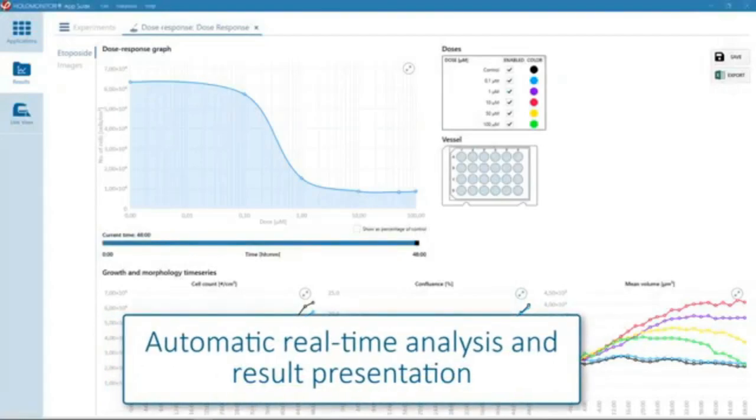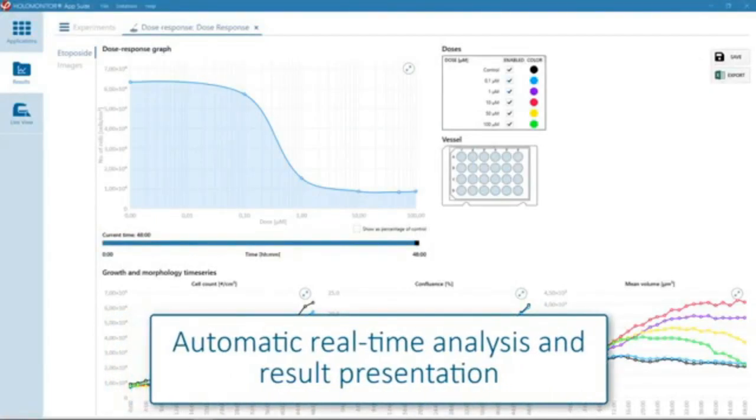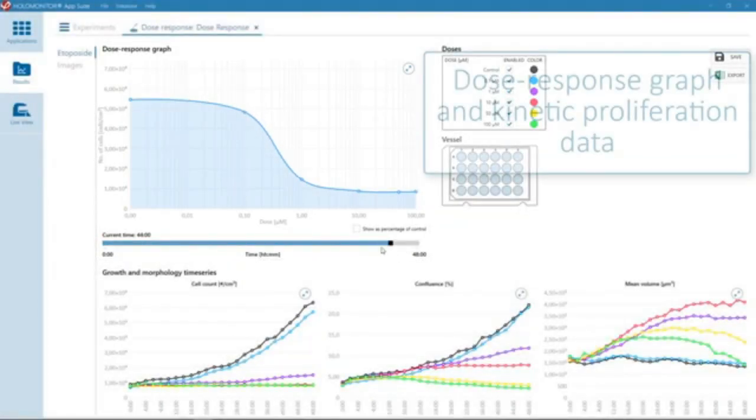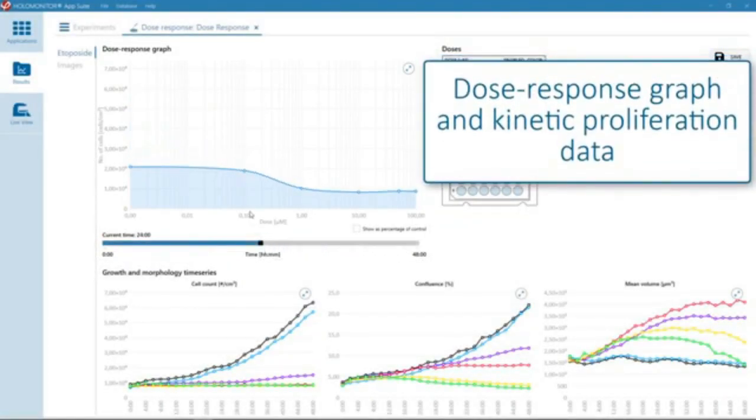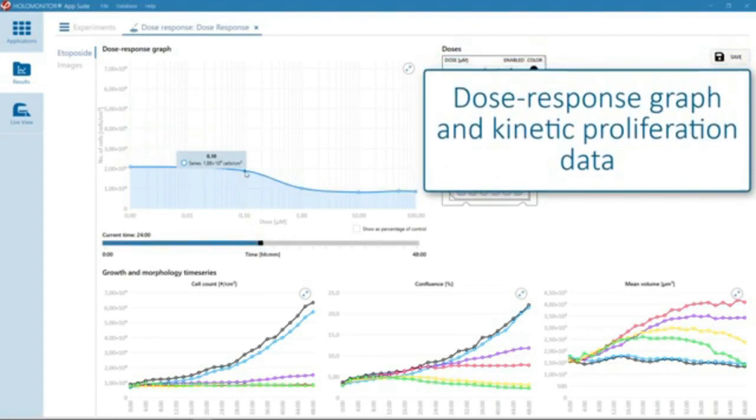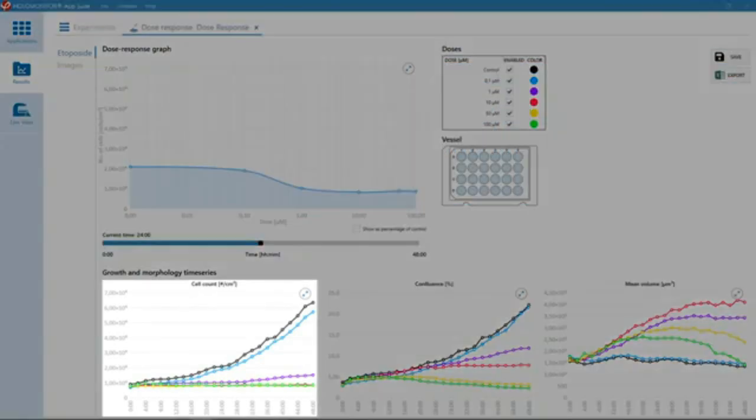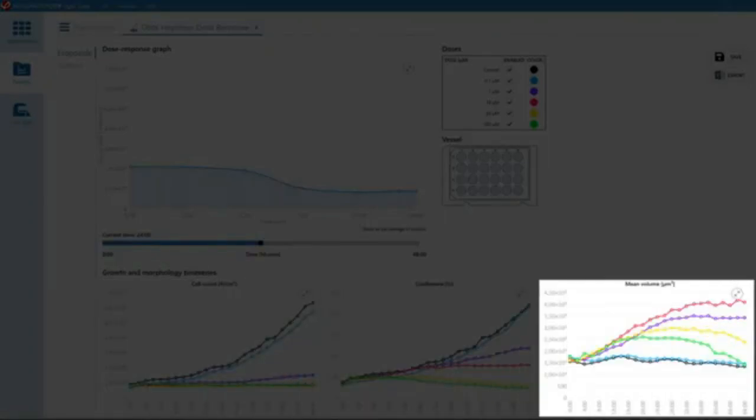The analysis is done automatically, and the results can be viewed in real time, like here, where you can see dose response graphs from any selected time point. You will also get kinetic proliferation data presented in graphs showing changes in cell number, confluence, and cell volume over time.